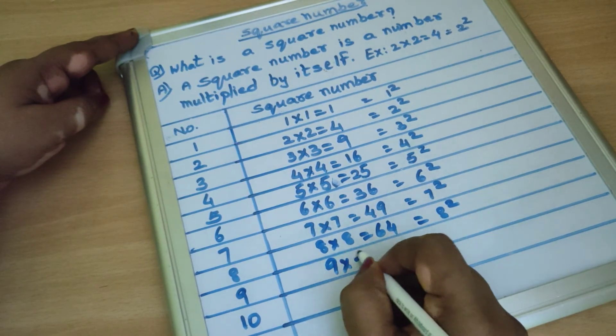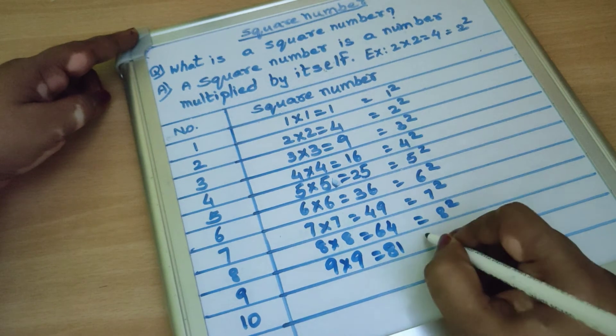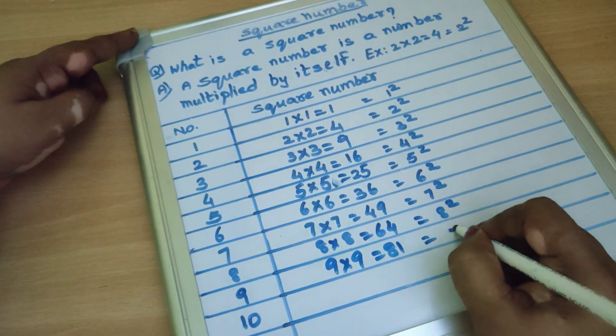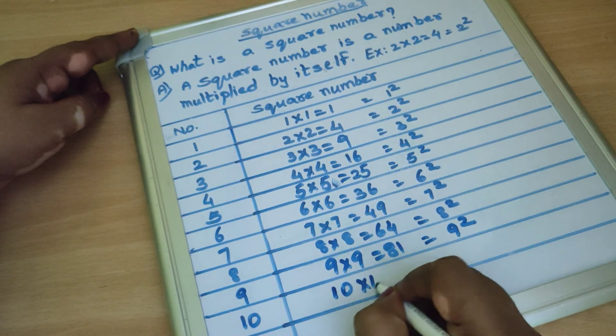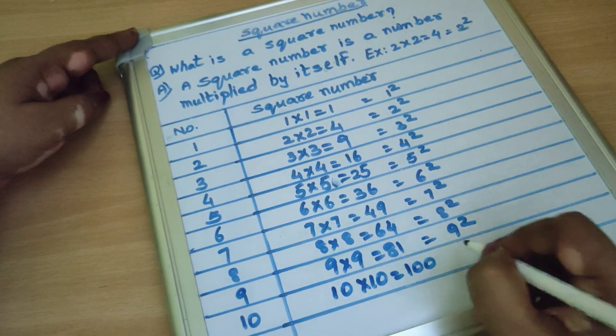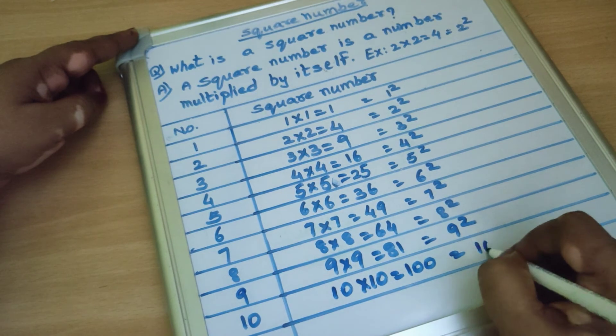9 into 9, 81. We write as 9 square. 10 into 10 equal to 100. We write as 10 square.